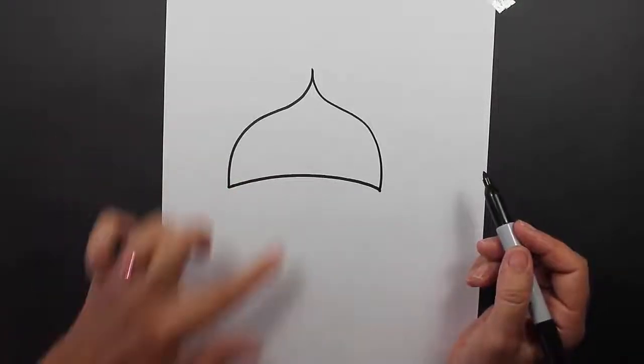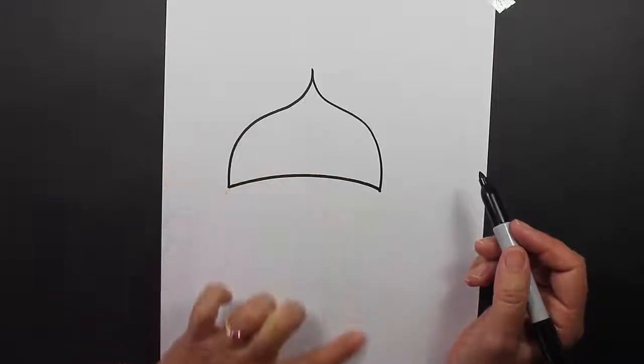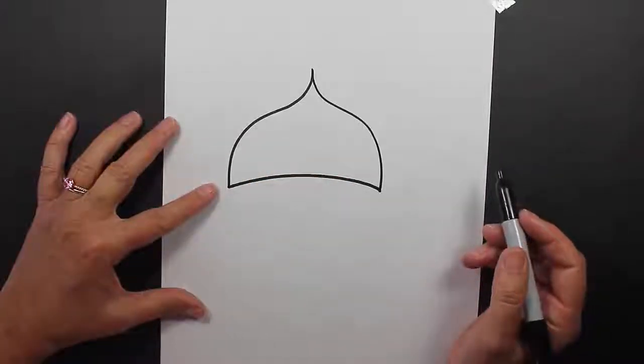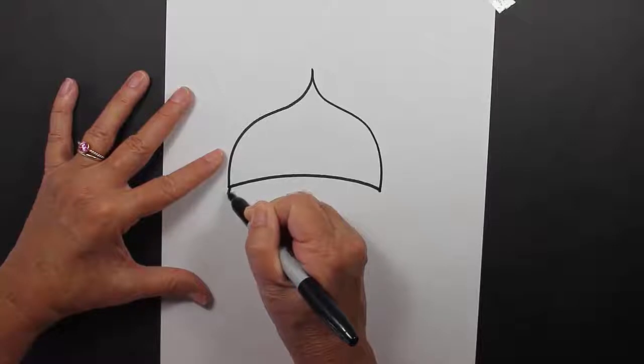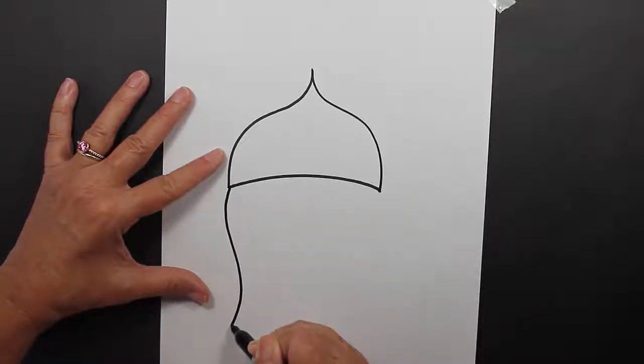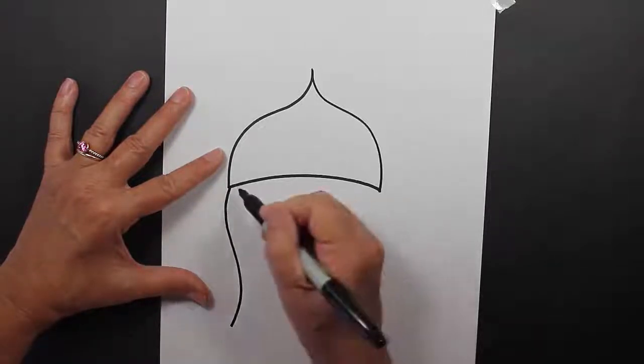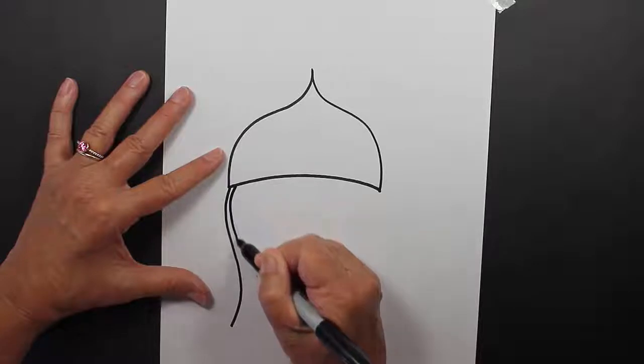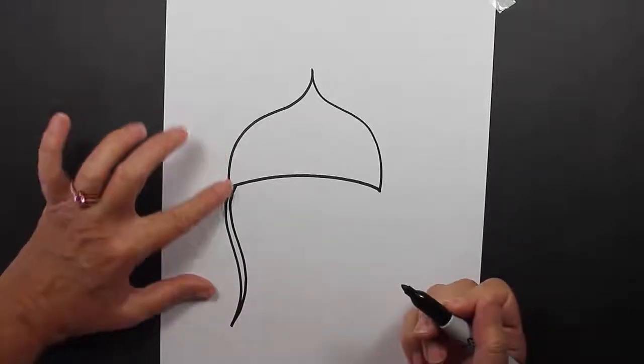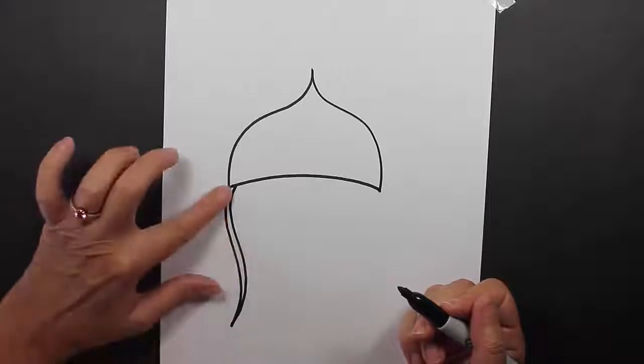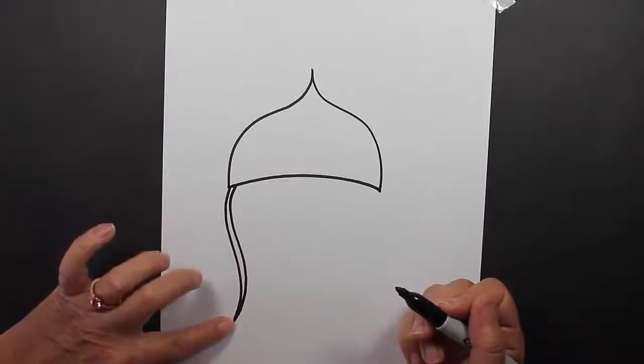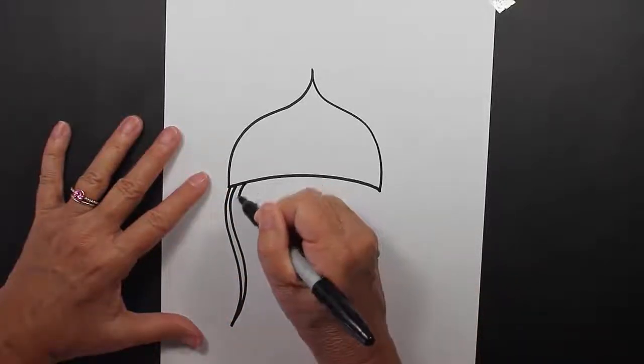Coming down from this curved line right here, we are going to make some tentacles. When we're creating our tentacles, we're just going to make some curvy lines that go like this, and they're going to be attached at the bottom, just like that. We have a curved line, and then another curved line that goes right next to it, and we attach it at the bottom with a point.